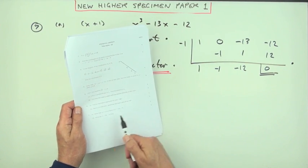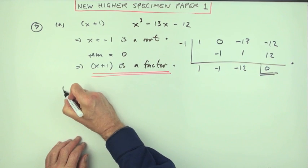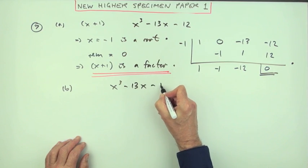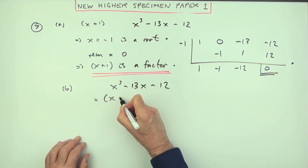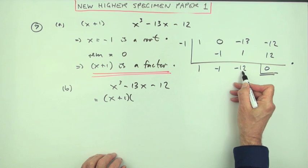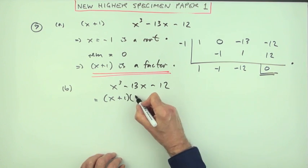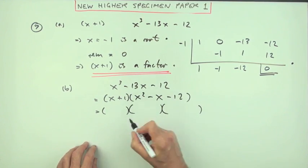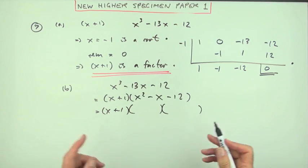Part B for two marks is just factorize it fully. Well, x cubed minus 13x minus 12 turned out to be x plus one times this part. Well, that will be the constant. And then that's x, and that's x squared. x squared minus x minus 12. So it's almost done. It's just a case of factorizing that quadratic there. And it's a simple one.